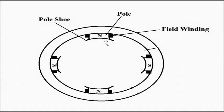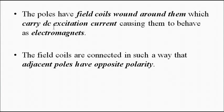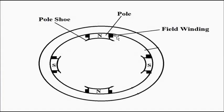You can see that the north and south poles are lying adjacent to each other. The poles have field coils wound around them; they carry the DC excitation current. To apply Fleming's rule and generate the magnetic field, we pass a current through these field poles so that they behave as electromagnets.